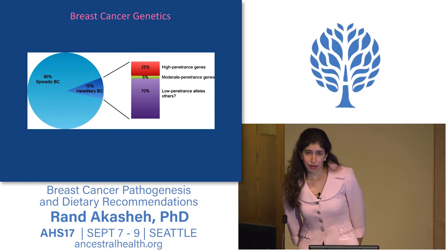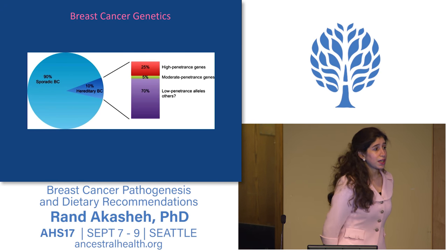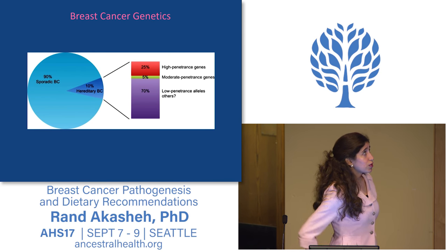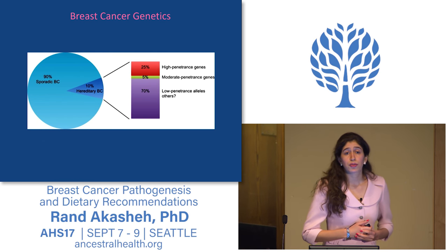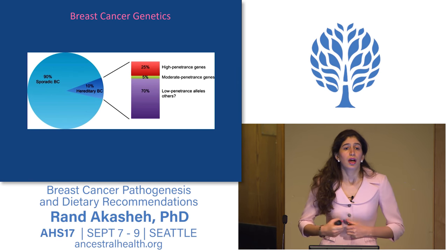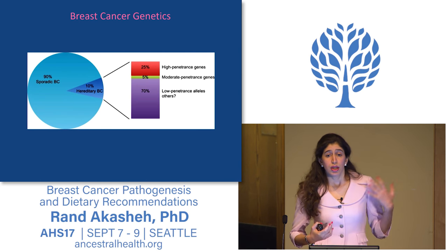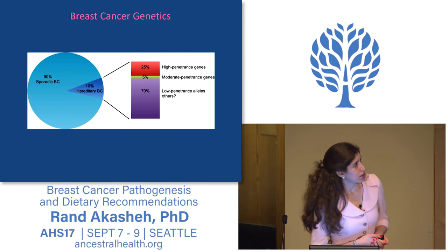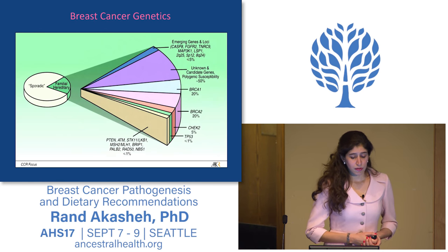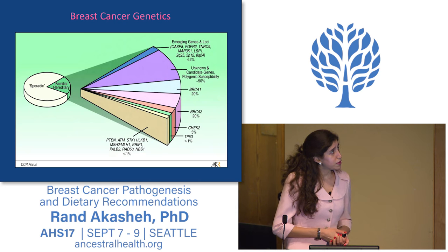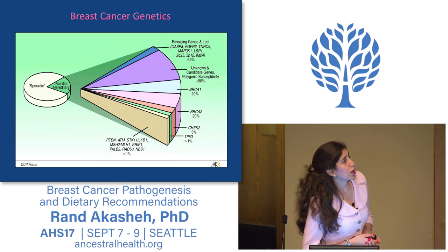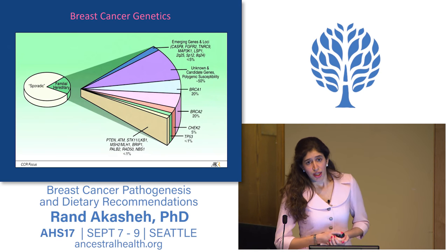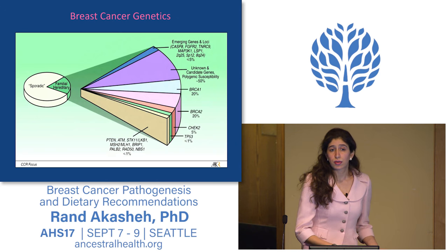Somebody in the audience asked me to address the genetics of breast cancer, because a lot of people are now getting genetic tests. This graph shows that actually 90 percent of breast cancer cases are sporadic — not related to family history or inherited genetic mutations. We have 10 percent of cases that are clustered in families, and in those familial cases, the genes BRCA1 and BRCA2 are responsible for most familial breast cancer. This is the most common genetic test if you want to test your risk.